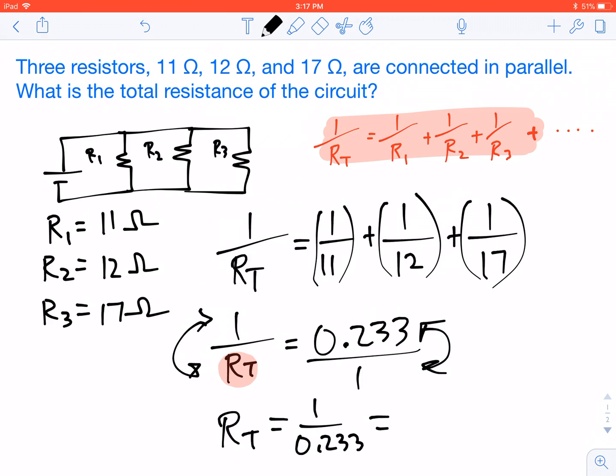When we plug that into the calculator, we get our final answer of, rounding up, 4.3 Ω. That is our total resistance.